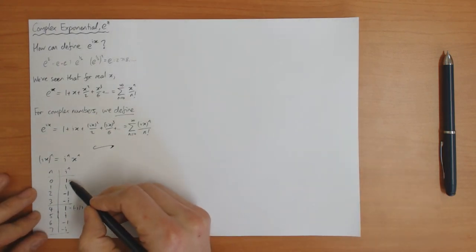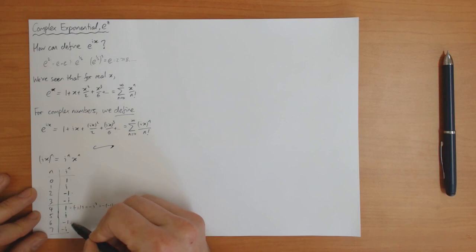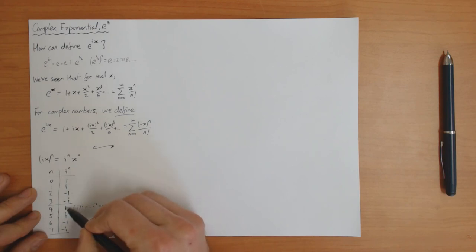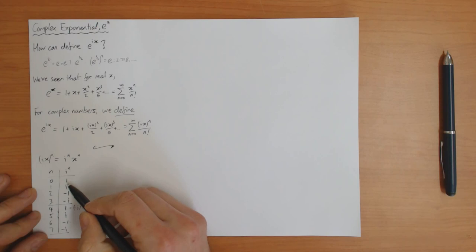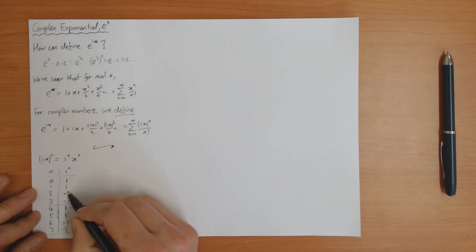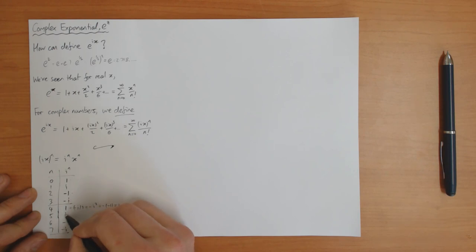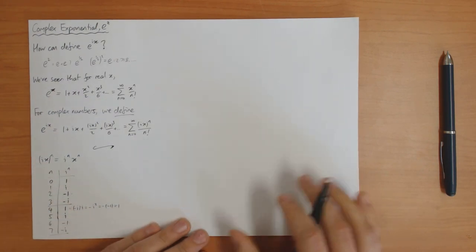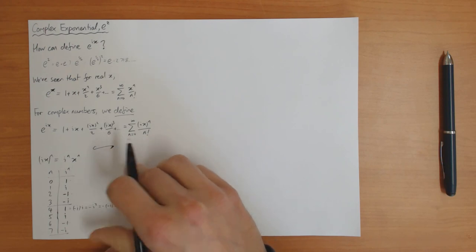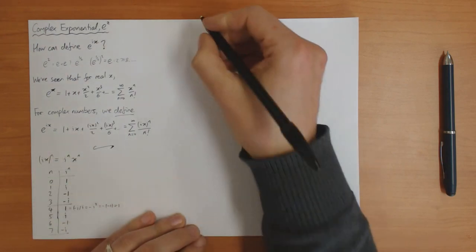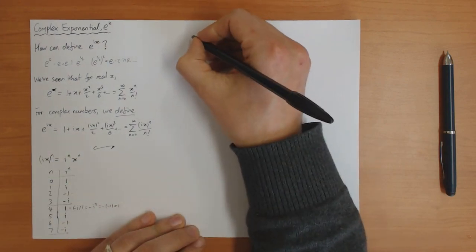As I claimed, the even n correspond to the real parts, and they have a plus 1, minus 1, plus 1, minus 1 pattern. The odd n correspond to the imaginary parts, and they have a plus i, minus i, plus i, minus i pattern. We can now take these results and put them into the series for e to the ix to see what we get.